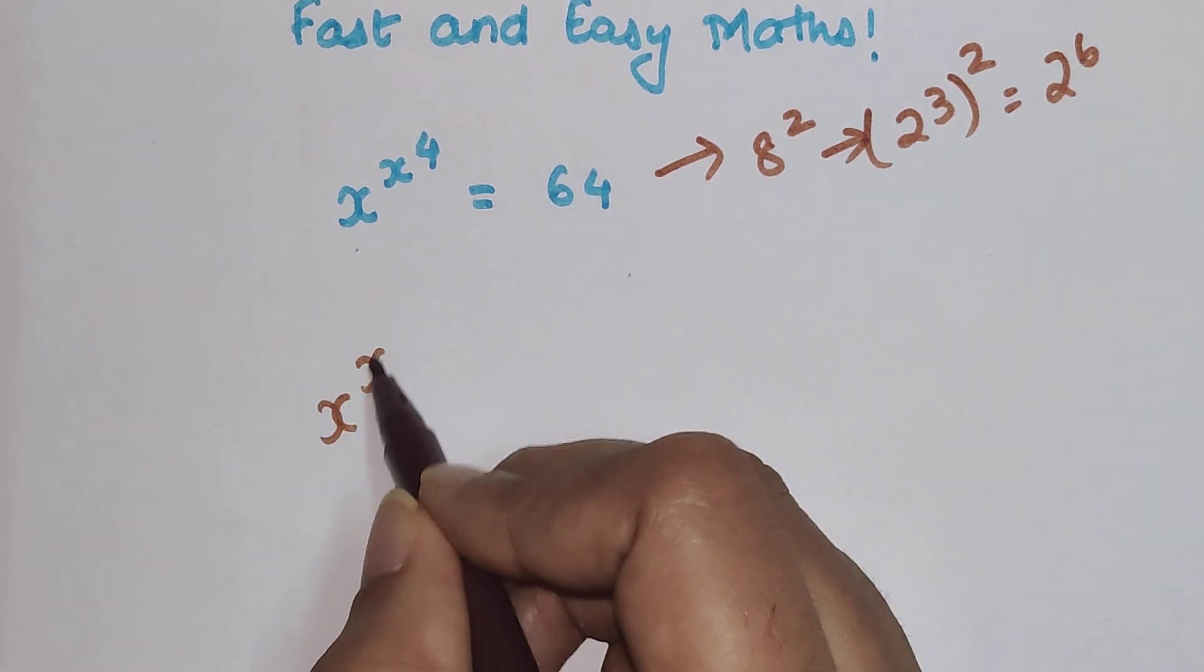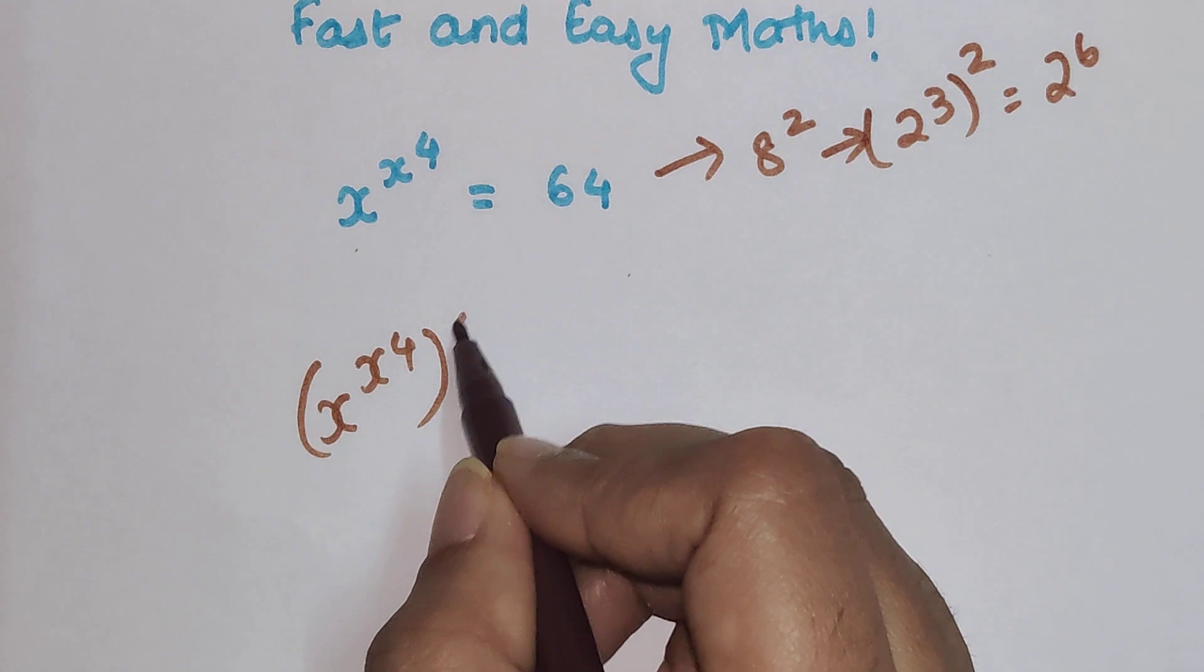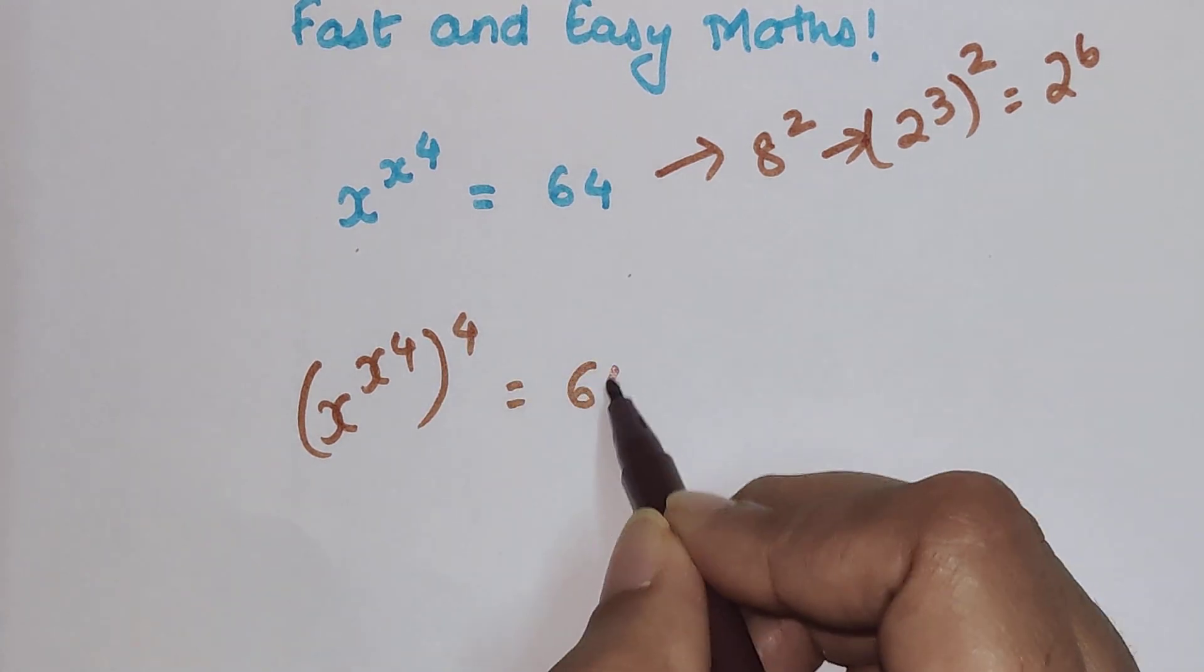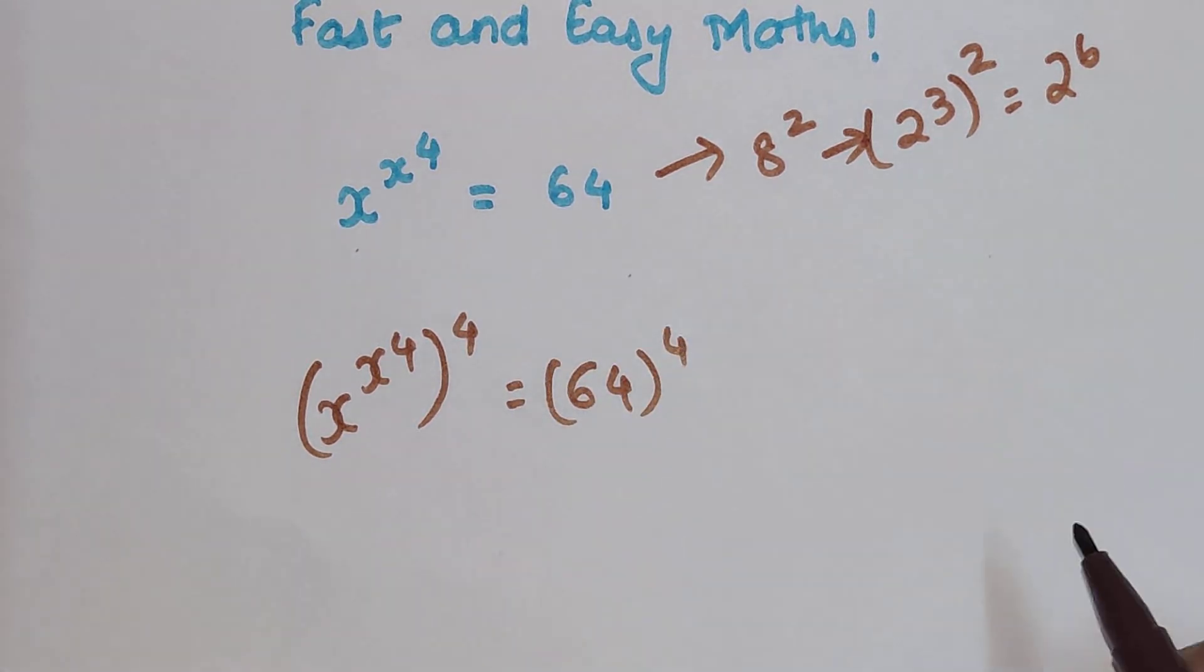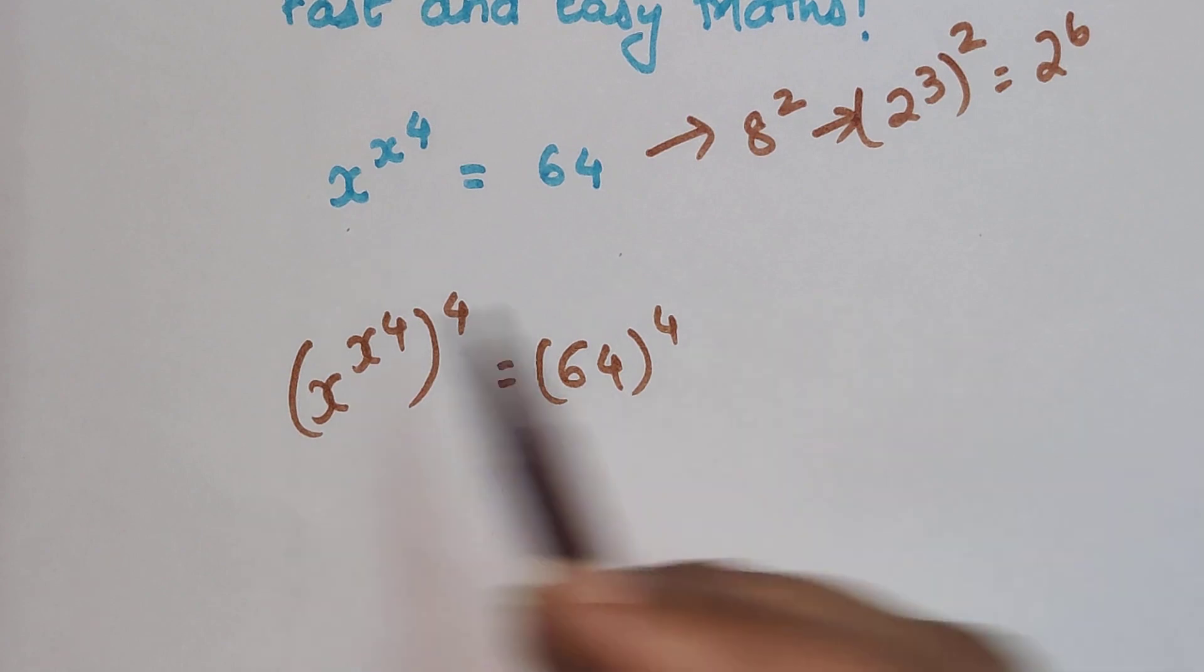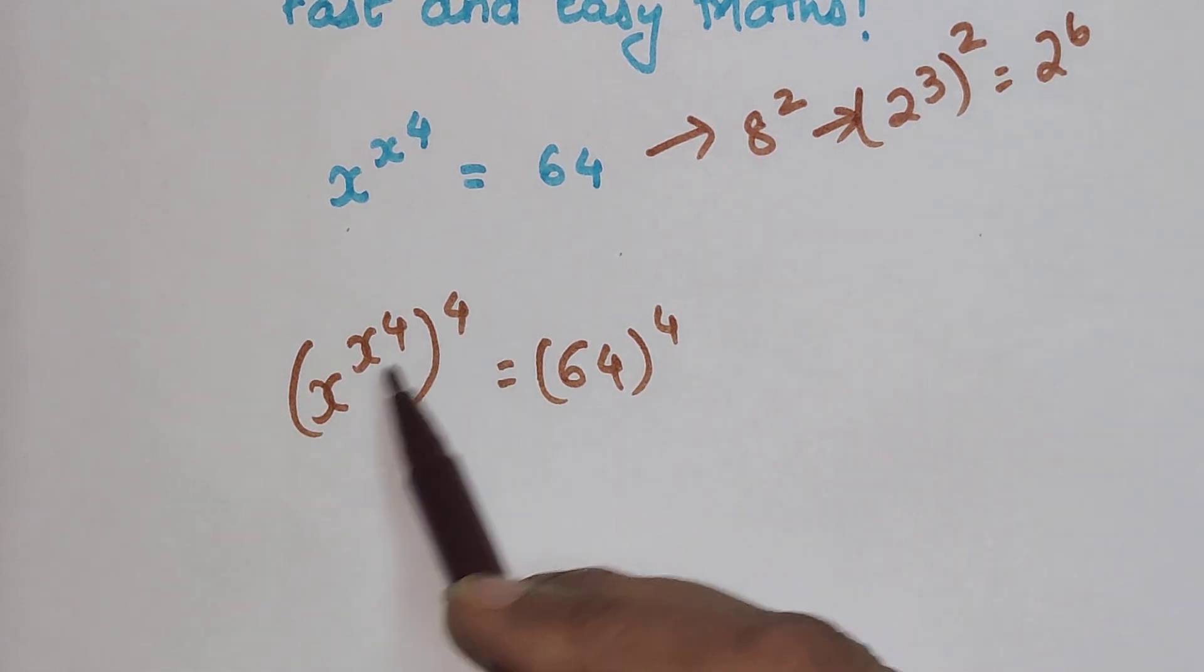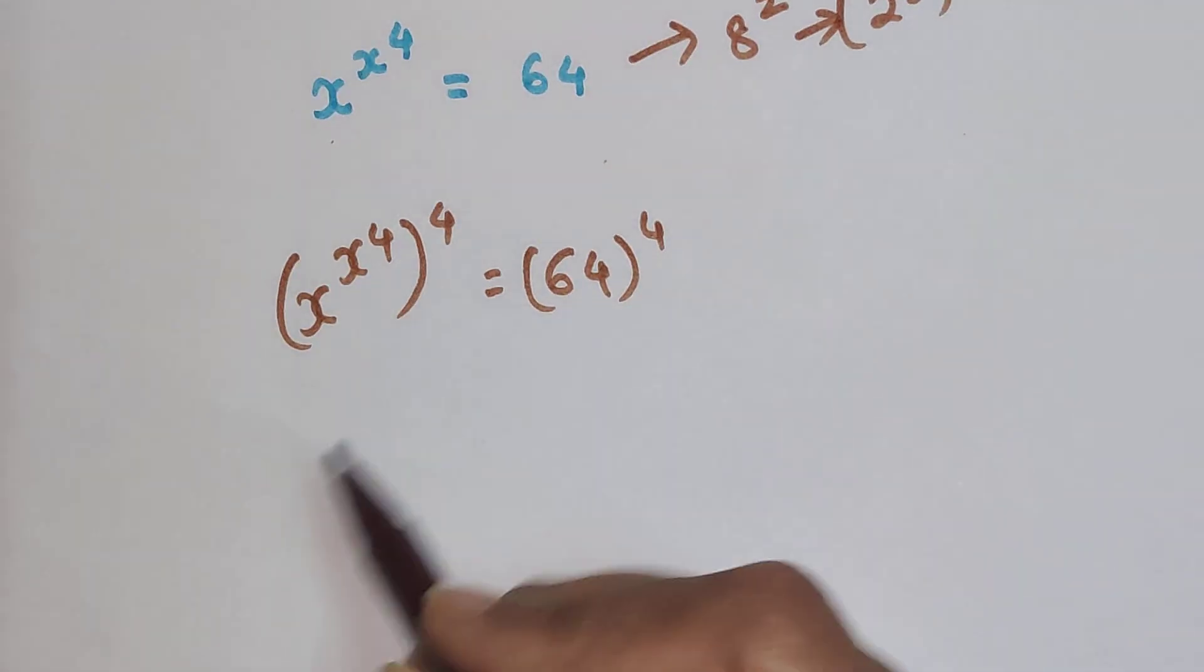What we'll get here is (x^(x^4))^4 = 64^4. Now why am I doing this? The moment I did this, I can rearrange this entire thing.